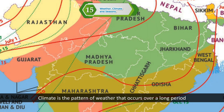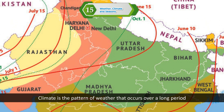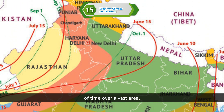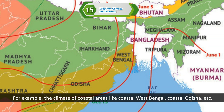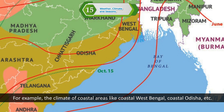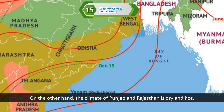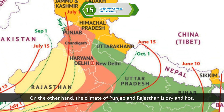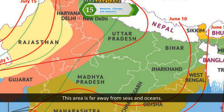Climate. Climate is the pattern of weather that occurs over a long period of time over a vast area. For example, the climate of coastal areas like coastal West Bengal, coastal Odisha, etc. is hot and humid, and it rains heavily there. On the other hand, the climate of Punjab and Rajasthan is dry and hot, as this area is far away from seas and oceans.